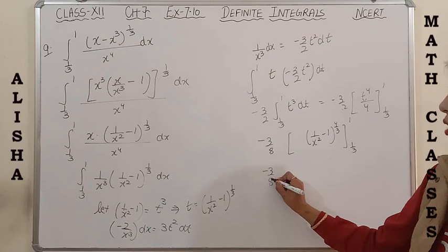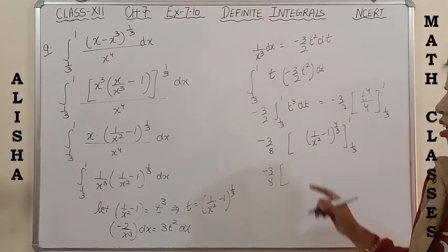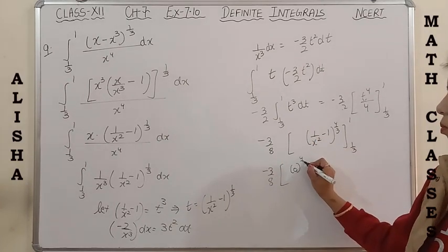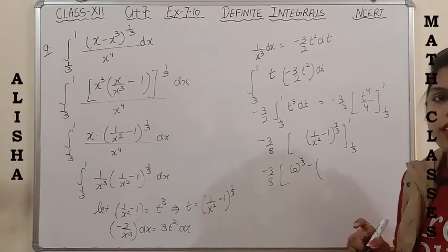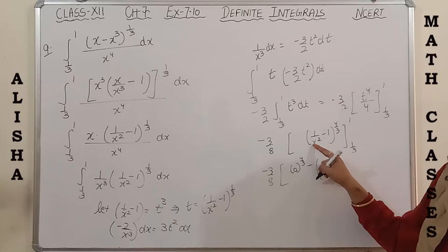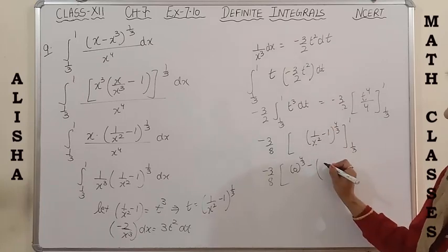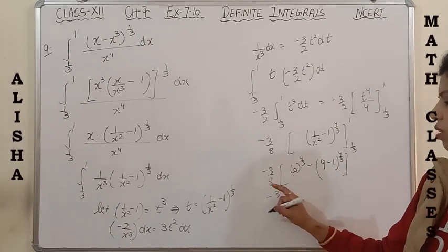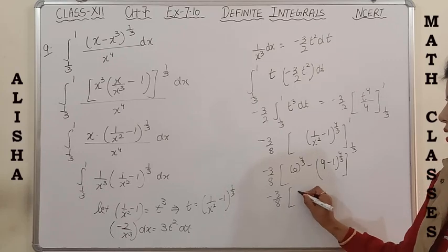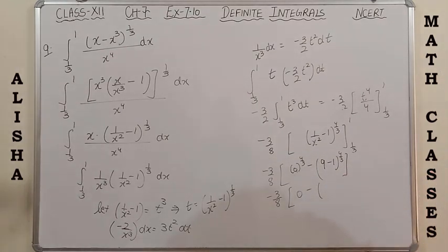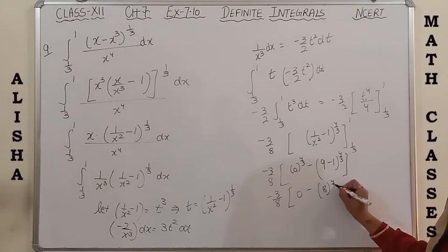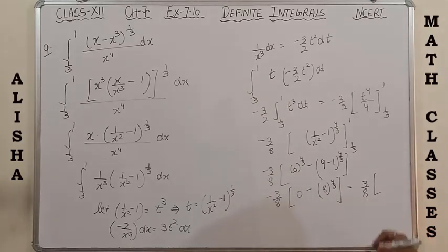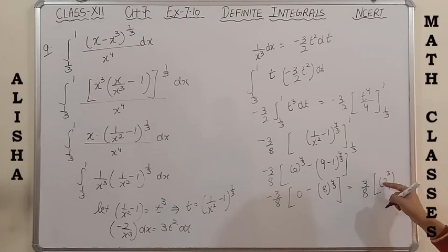Putting upper limit x = 1: 1/1² - 1 = 0, so 0^(4/3) = 0. Putting lower limit x = 1/3: (1/(1/3)²) - 1 = 9 - 1 = 8. So it becomes 0 minus 8^(4/3), and minus minus becomes plus, giving +8^(4/3).